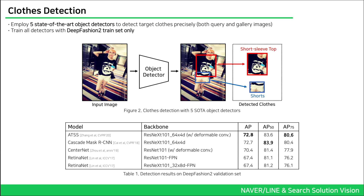We train those detectors with the DeepFashion2 train set only and report the validation results on Table 1. Every detector shows high AP scores, and we utilize these models in the following post-processing stage.